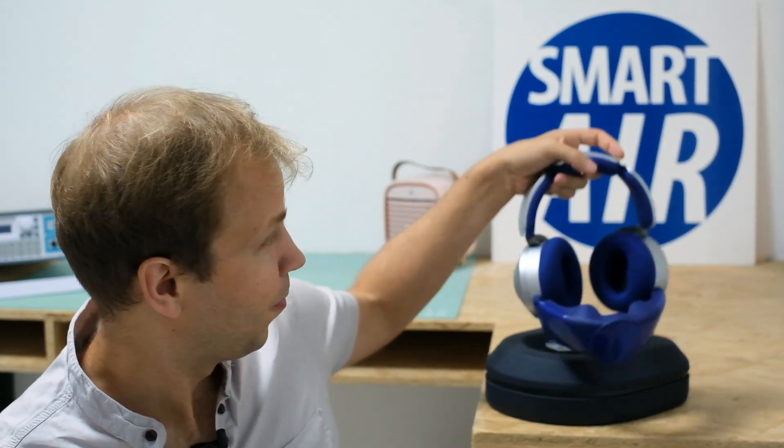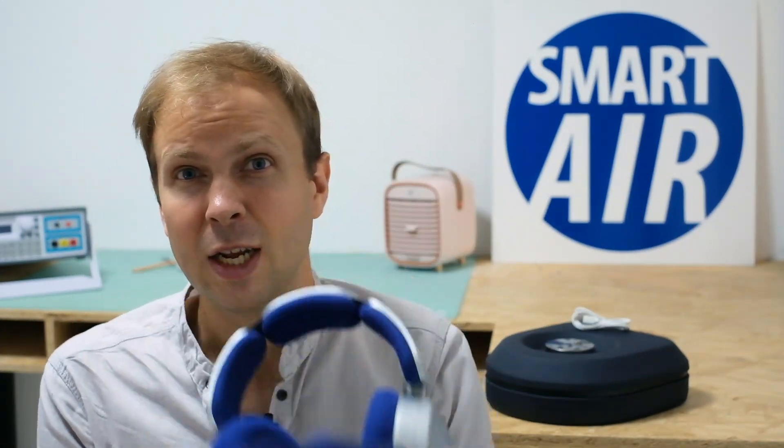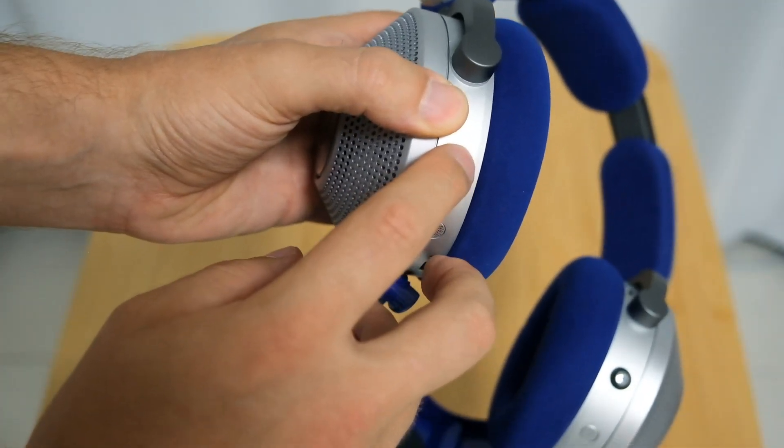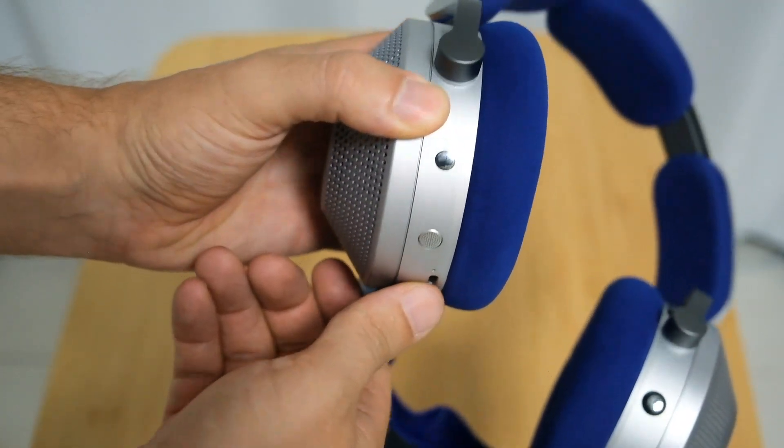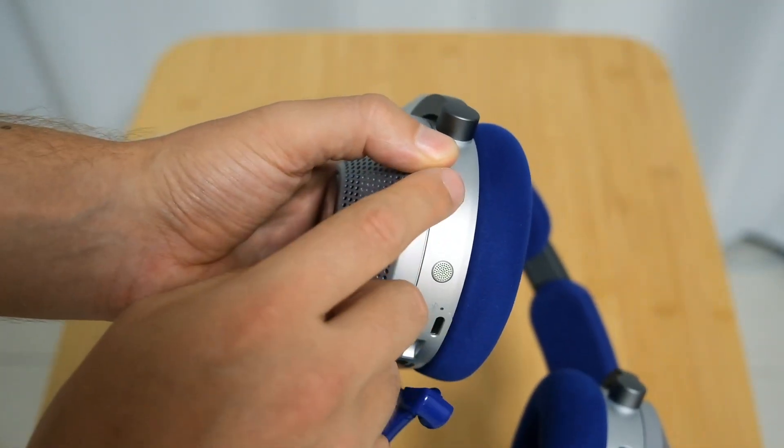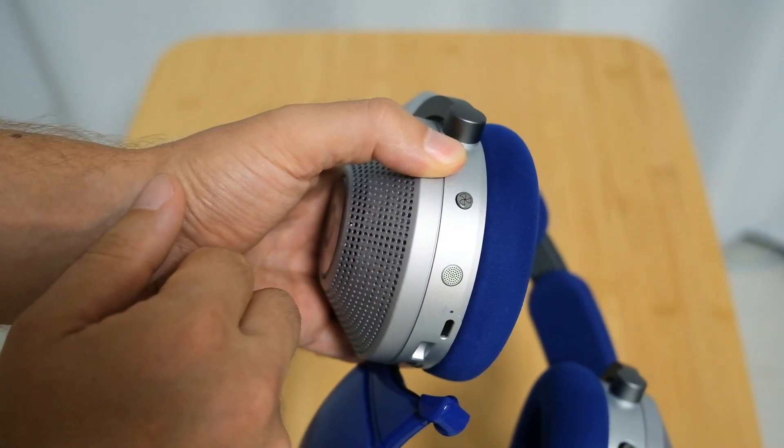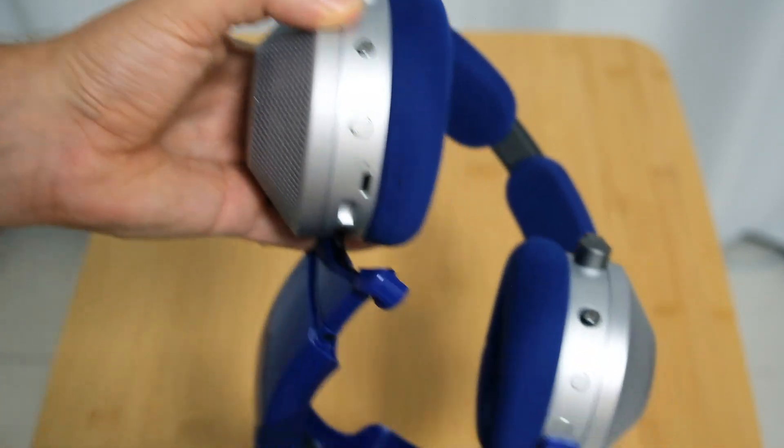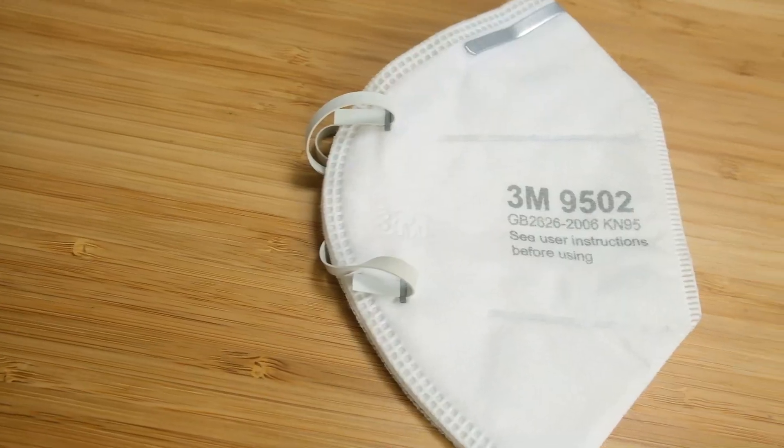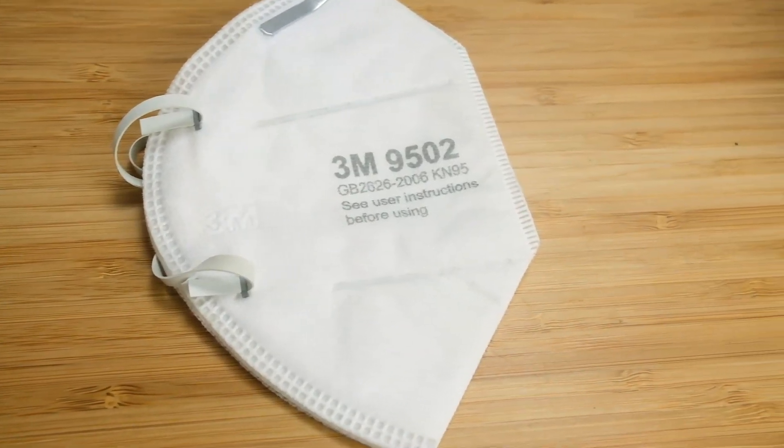Another thing worth noting about the mask if you're out and about is that the headphones when you're using the fan on high will only last about one hour so they'll only give you about one hour of battery life. If you're running it on low you might get three hours but still that's not enough for a full day. So you'll probably want to bring a backup battery pack or more likely backup N95 mask to wear when this runs out of battery.